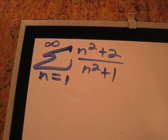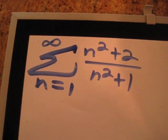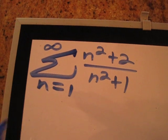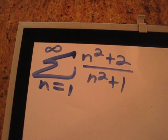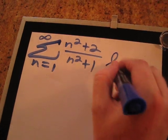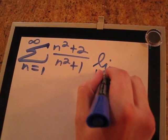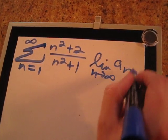We are going to use the nth term test for divergence to show that this infinite series diverges. So what we will do is apply the limit as n approaches infinity to a sub n.